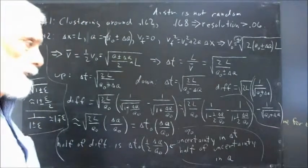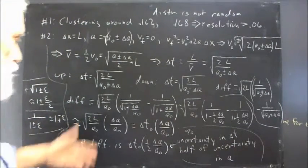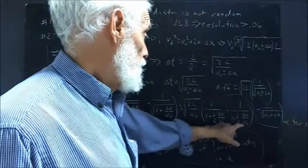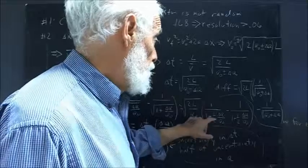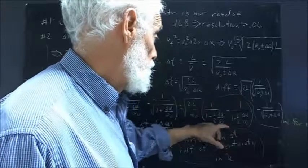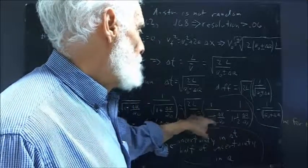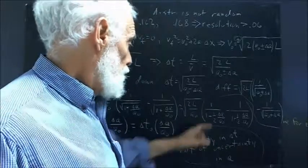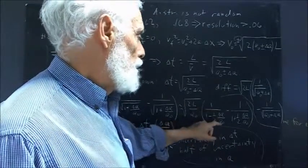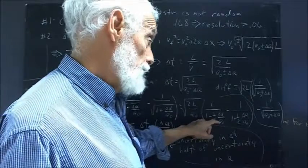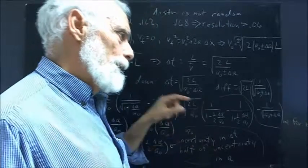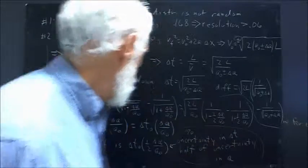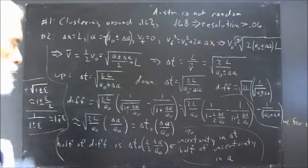And, then we do just a little more algebra. And, you should be able to do this. You put this over a common denominator. You're going to get this in the numerator here. You're going to get this in the numerator over here. And, you're going to get 1 minus one half delta a over a-naught quantity squared in your denominator. Well, delta a over a-naught is small. One half of that is even smaller. And, when you square something that's pretty small, you get something that's really small. So, that the denominator is essentially going to be 1. And, you get this approximation.